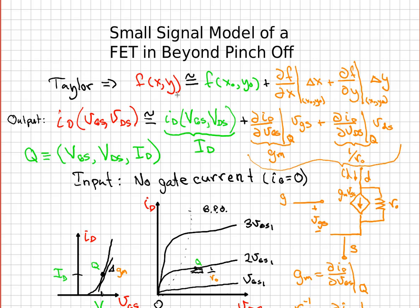It's F evaluated anywhere X and Y, approximately equal to F evaluated at the specific point X₀, Y₀, which we'll call the Q point, plus the derivative in the X direction times the little ΔX, plus the derivative in the Y direction at that point times the ΔY.